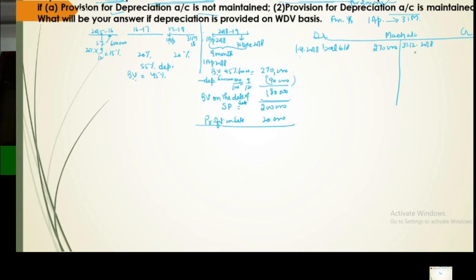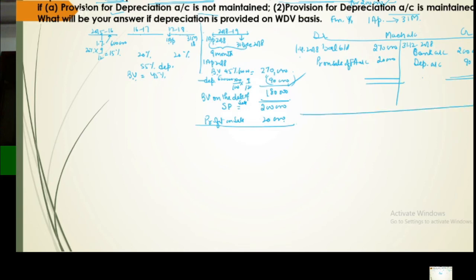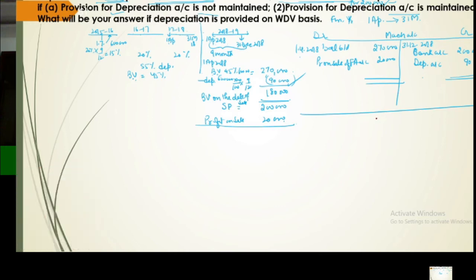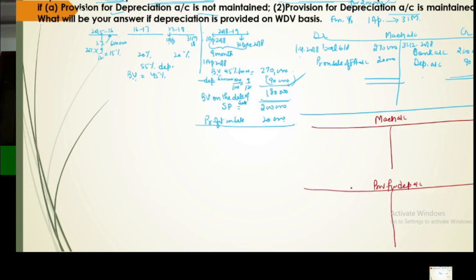Now if preparing the machine account without provision: on 1st April 2018, balance of this asset is 2,70,000. On 31st December 2018 (date of sale), we record three things: sale at 2,00,000 on credit side, depreciation of 90,000 on credit side, and profit of 20,000 — since profit appears on debit side, we credit 'profit on sale of fixed asset/machine account' for 20,000. The account closes out.